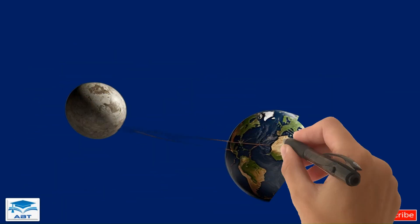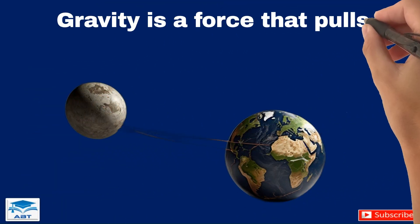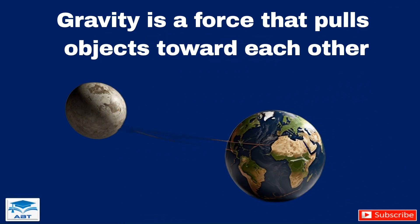So what exactly is gravity? Gravity is a force that pulls objects toward each other. The more massive an object, the stronger its gravitational pull. That's why we're all being pulled towards the Earth—it's much bigger and more massive than anything else around us.